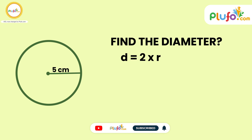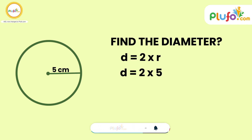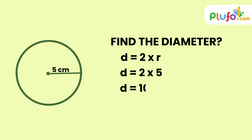Now placing the value: diameter is equal to 2 times 5, which gives us 10. So the diameter for this given circle is 10 centimeters.